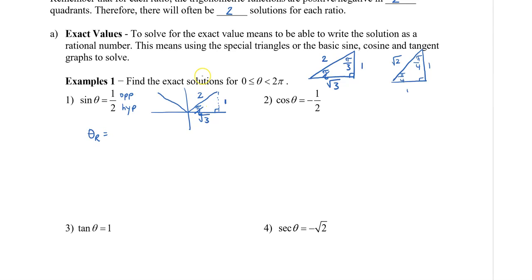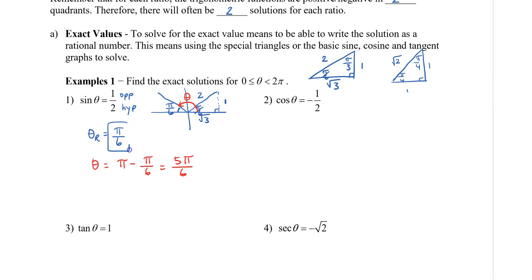My reference angle is π/6. To find the second angle in the second quadrant, I use the reference angle — going halfway is π, so I subtract π/6: π − π/6 = 5π/6. So my two answers are θ = π/6 and θ = 5π/6.